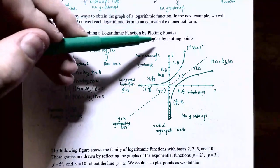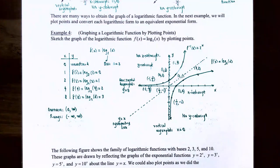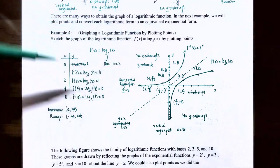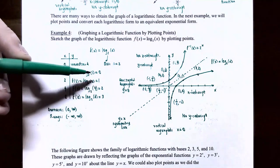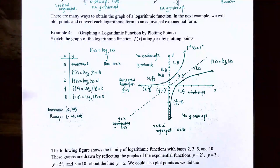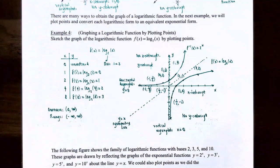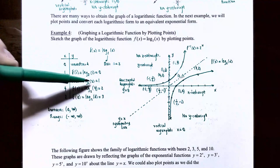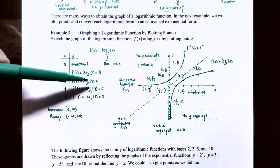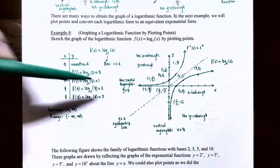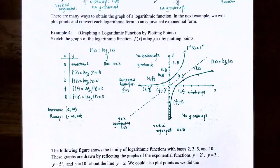Substituting these values into log base 2 of x: when x equals 0, there's a vertical asymptote at x equals 0, so y is undefined. When x equals 1, f of 1 is log base 2 of 1 — what exponent on 2 gives 1? Since 2 to the 0 equals 1, the answer is 0. So the point is 1 comma 0, the x-intercept. When x equals 2, log base 2 of 2 — the exponent must be 1 since 2 to the first is 2, so the point is 2 comma 1.